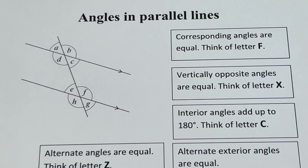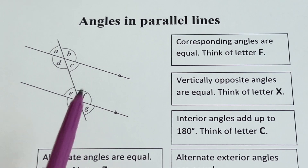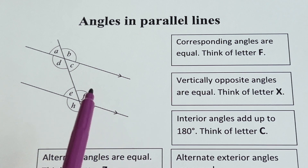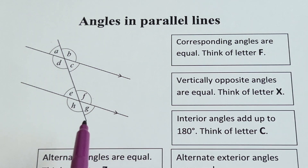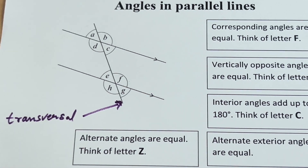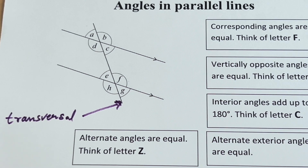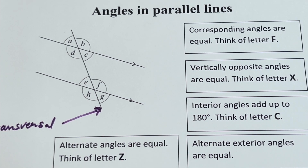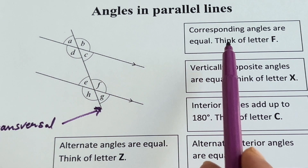Angles in parallel lines. These are two parallel lines — they are marked with arrows — and the line that crosses the parallel lines is called a transversal. The first point, in the top right corner, says corresponding angles are equal.